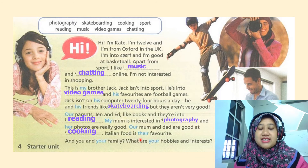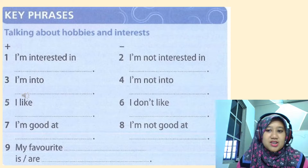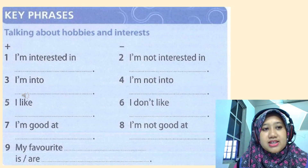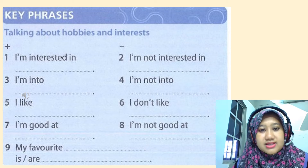What are your hobbies and interests? Have you thought about it? Good — we're going to use it for our next activity. We're going to talk about hobbies and interests. As you can see, we have a few statements here: I'm interested in / I'm not interested in. I'm into / I'm not into. I like / I don't like. I'm good at / I'm not good at. Here are the positive statements, and here are the negative ones — you can see the word 'not' and 'don't' in the negatives.